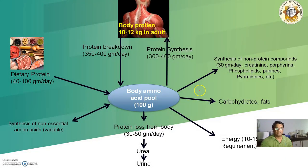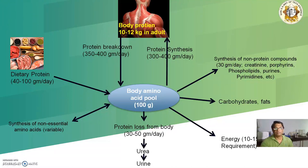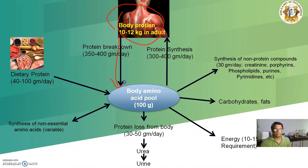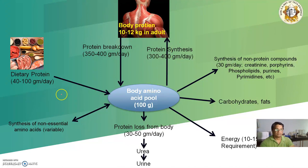Nearly about 100 grams of protein is always there in the body's amino acid pool, and nearly about 10 to 12 kilograms of proteins are present in a human adult. These proteins are of static and dynamic kinds of structure. Static structures are like muscles, and dynamic structures are like hormones and enzymes. Nearly about 300 to 400 grams of protein is daily broken down into amino acids, and synthesis of protein is done in the same manner. From dietary sources, nearly about 40 to 100 grams of protein is required.